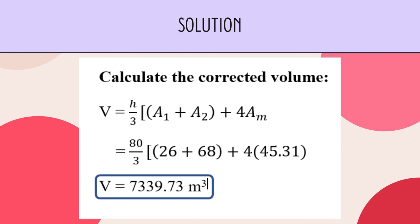Finally, we calculate the corrected volume using the formula: V equals H over 3, multiplied by (A1 plus A2 plus 4 times A_M). Substituting: 80 over 3, multiplied by (26 plus 68 plus 4 times 45.31), giving a corrected volume of V equals 7,339.73 m³.